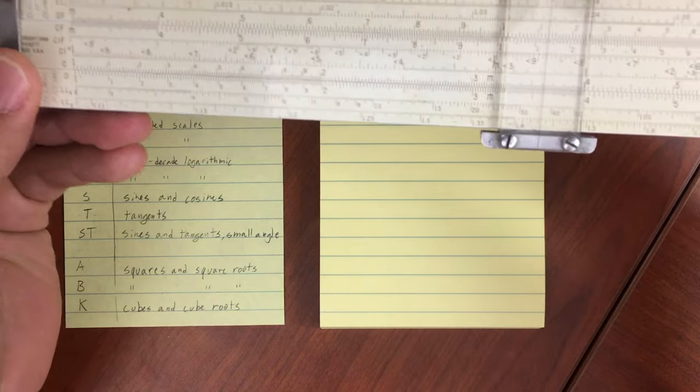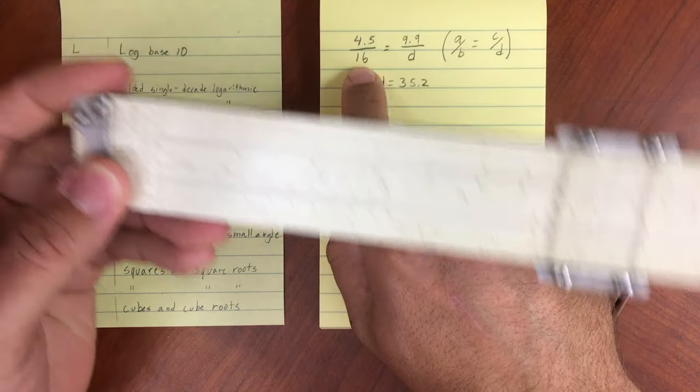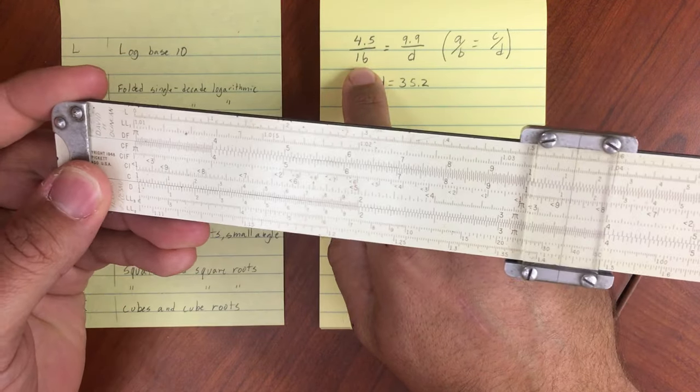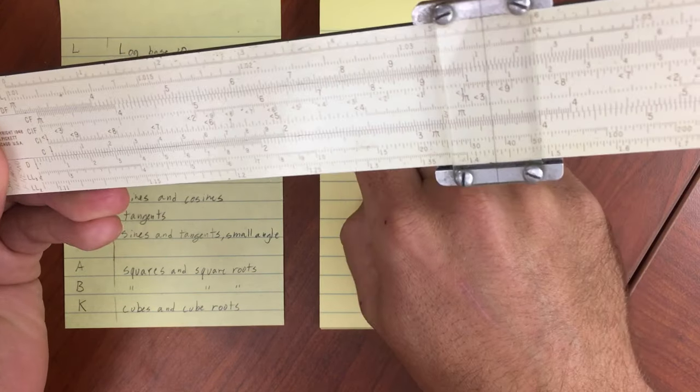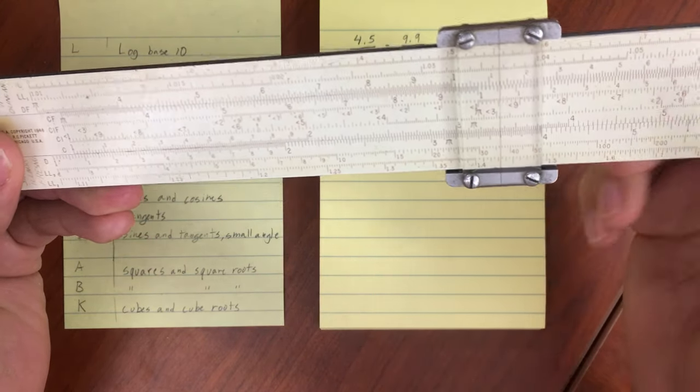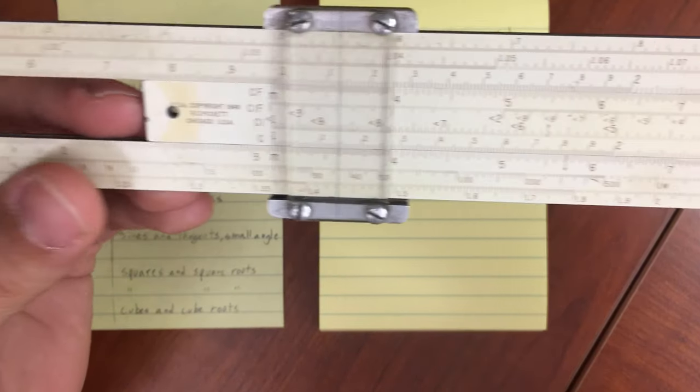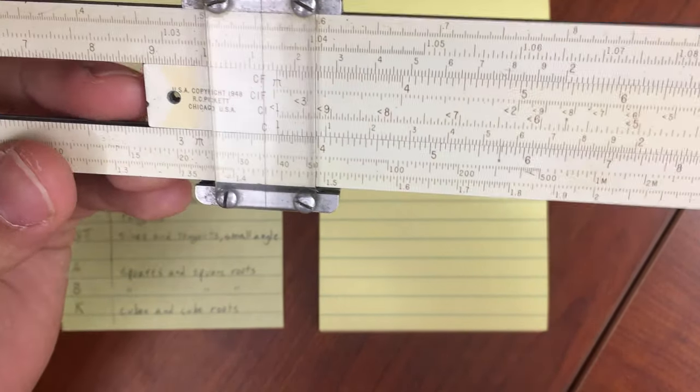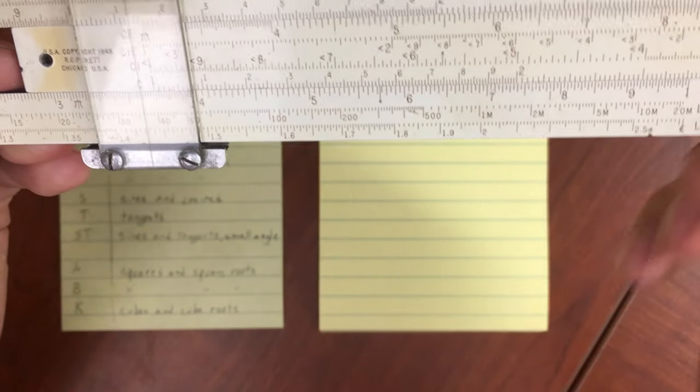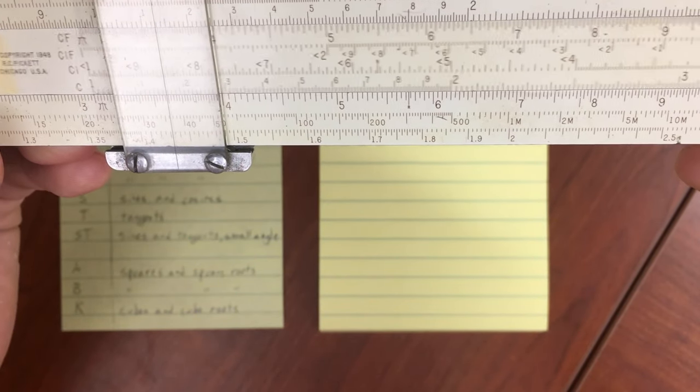I'm going to take my denominator on this side, 16 on my C scale, and move it over to my numerator, 4.5, on my D scale. So I'm going to move this 1.6 here, and I need it to go to 4.5.